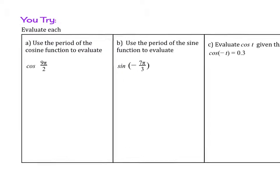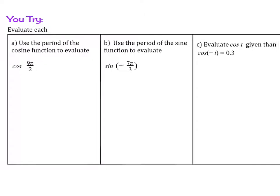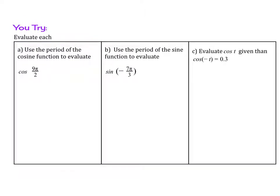Try these examples. Use the period of the cosine function to evaluate. Just find a coterminal angle between 0 and 2π by subtracting or adding multiples of 2π. And c is knowing whether that's even or odd.